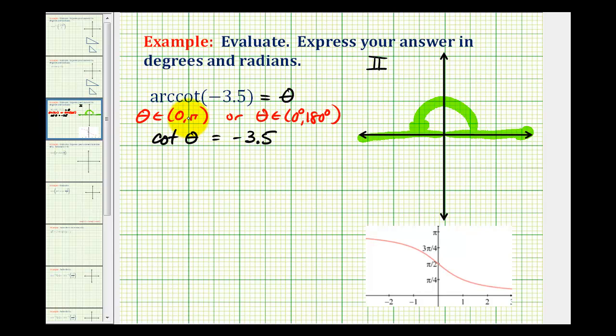So now we need to make the connection that if cotangent theta is equal to negative 3.5, or negative 3.5 over 1, since tangent and cotangent are reciprocals, tangent theta must equal the reciprocal of this function value, or negative 1 over 3.5.